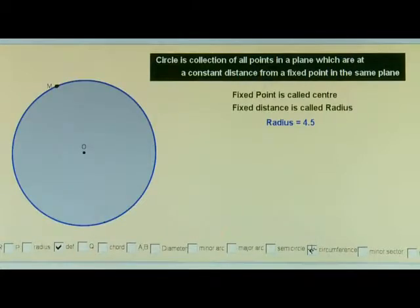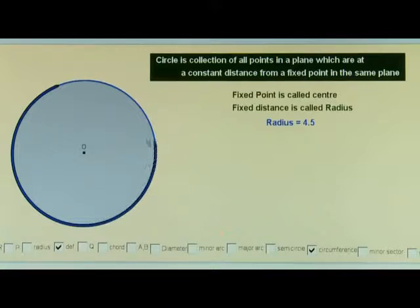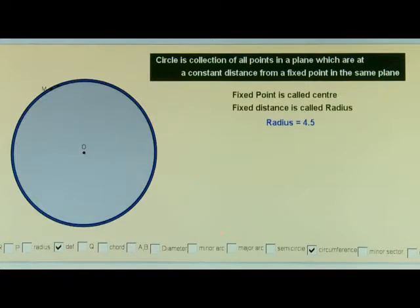Take a point M on the circle. Let the point M move along the boundary of the circle and make a complete rotation. When it comes back to its original position, it has completed just one round around the boundary of the circle. The total length covered by point M is known as the circumference of the circle. Hence, the length of the boundary of a circle is known as its circumference.